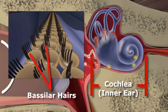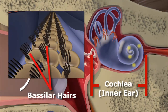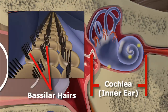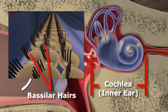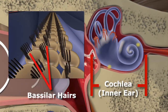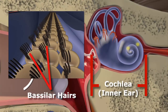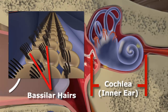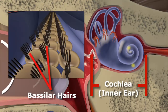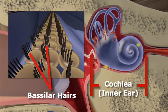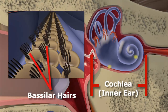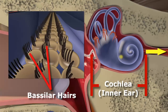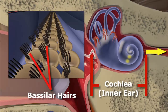As the fluid movement passes over the hair-like cells, they vibrate at frequencies of up to 20,000 times per second. This could be likened to the movement of seagrass with the ocean waves passing above. This vibration is then transmitted to the brain as an electrical signal that is interpreted as sound.